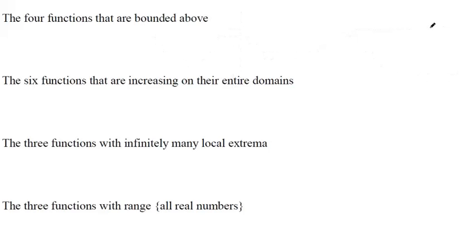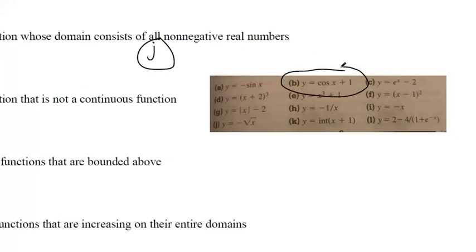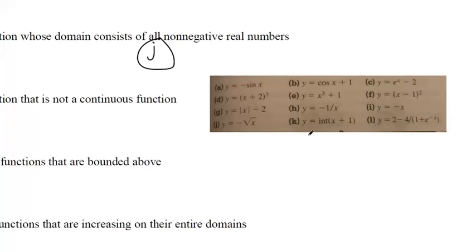Cosine is the same type of graph as sine, just shifted, and it's also bounded above — it can get no higher than one. So that gives us three of the four functions bounded above. One of the other functions has been altered from the original and that's why it has an upper bound.